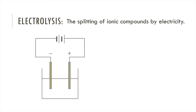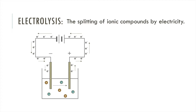How does this constitute a complete circuit? Electricity is the flow of charge, and for charge to flow across the entire circuit it needs to be carried by something. In the metal wires and electrodes the charge is passed along by the delocalised electrons. In the solution there are free moving ions which can also carry the charge, and thus this completes the circuit.